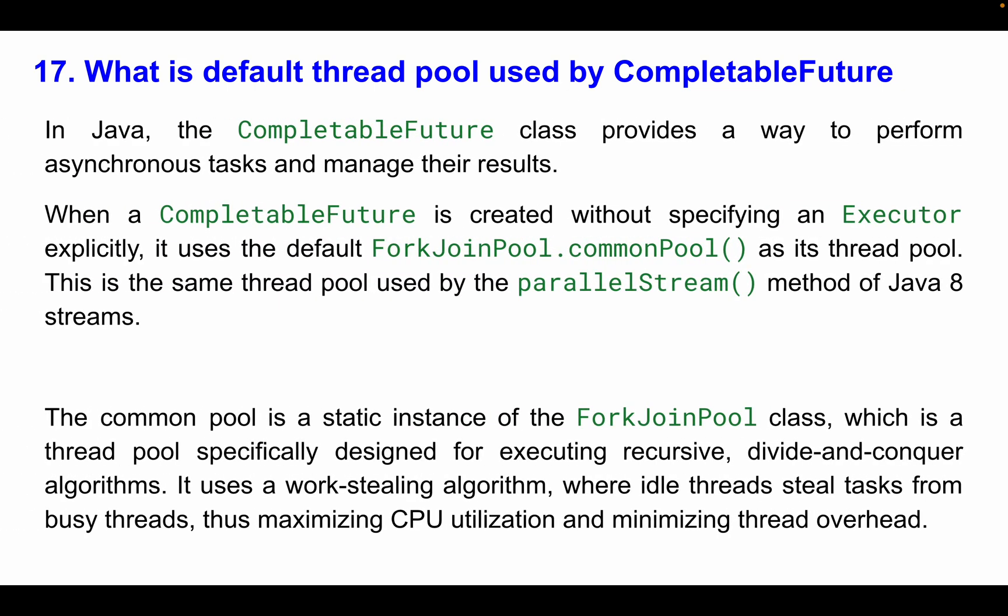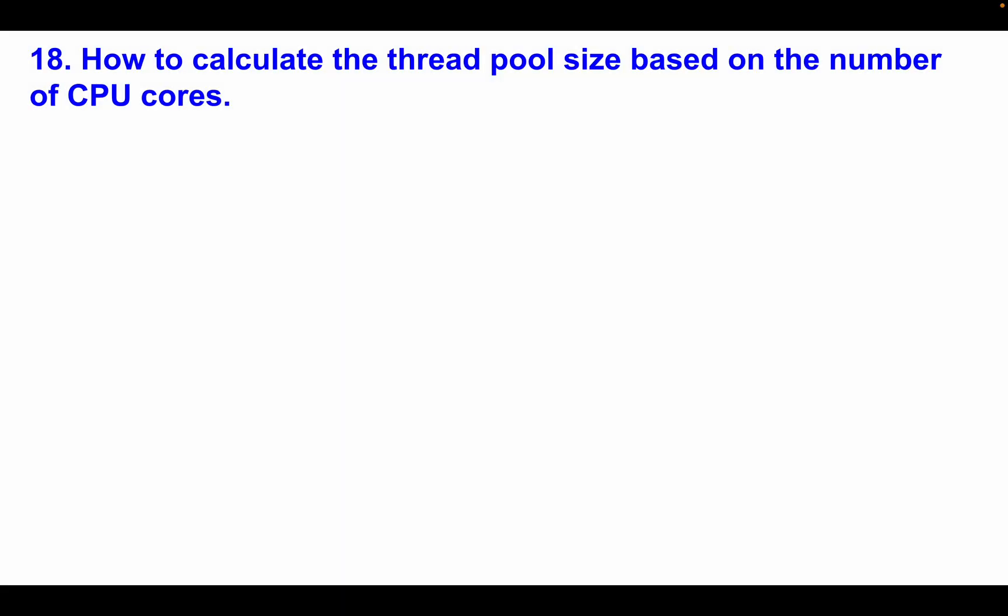Question 17: What is the default thread pool used by CompletableFuture? In Java, CompletableFuture provides a way to perform asynchronous tasks and manage their results. When a CompletableFuture is created without specifying an executor explicitly, it uses the default ForkJoinPool.commonPool() as its thread pool — the same thread pool used by parallel streams in Java 8. The common pool is a static instance of ForkJoinPool, designed for recursive divide-and-conquer algorithms. It uses a work-stealing algorithm where idle threads steal tasks from busy threads, maximizing CPU utilization and minimizing thread overhead.